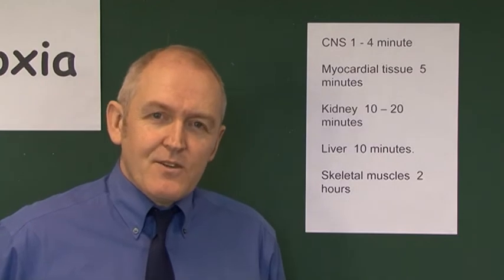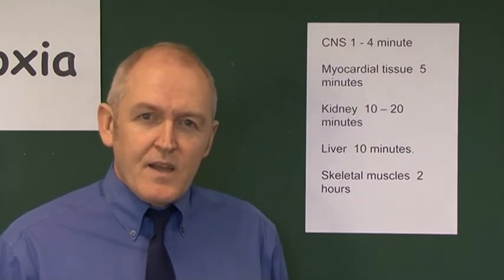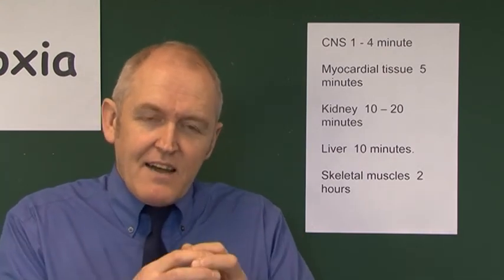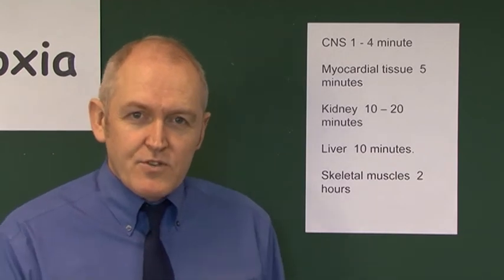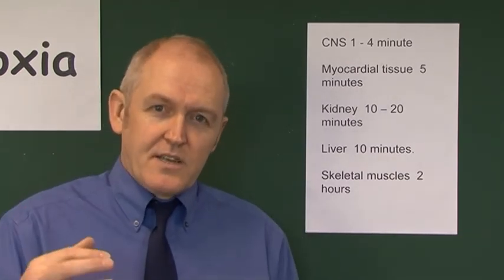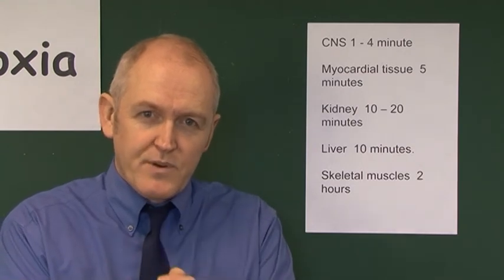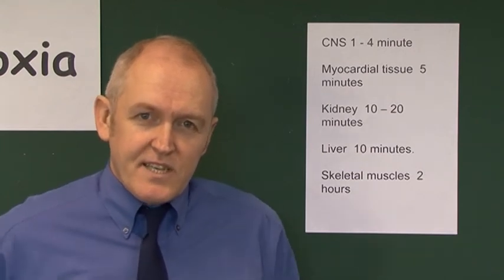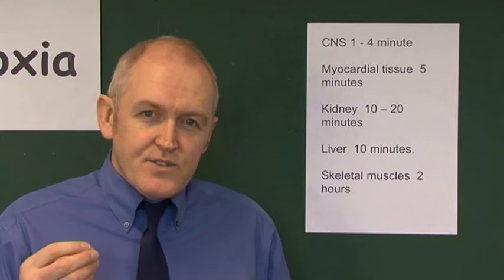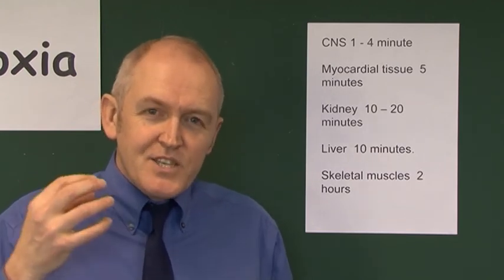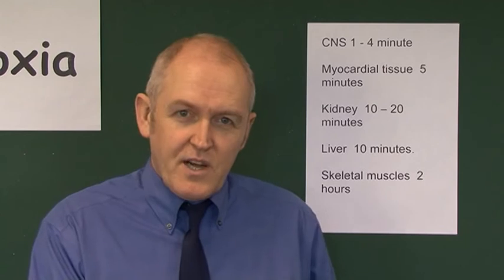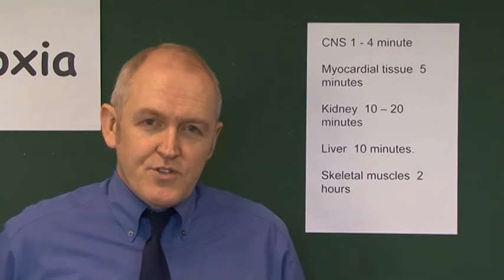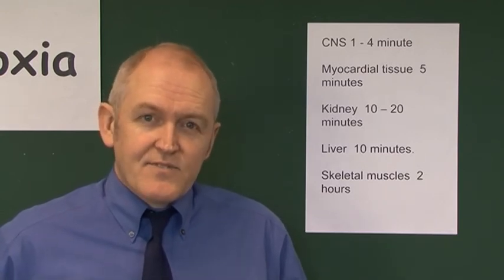The myocardium itself is very oxygen dependent. Experimental studies have shown that three to five minutes after losing their oxygen supply, myocardial cells will stop contracting. After that there will be progressive damage eventually resulting in cell death. This is why, if we are going to thrombolyse patients — that is, remove the thrombus from a coronary artery to reperfuse the myocardium after a coronary thrombosis — we should do so as quickly as possible after the initial event.